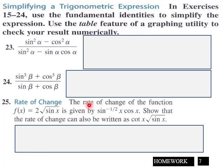Put your responses here. The rate of change of the function f(x) = 2 times radical sine x is given by sine x over 2 cosine x radical sine x. The rate of change can also be written as cotangent x sine x radical sine x. This is 6 points for page 7.